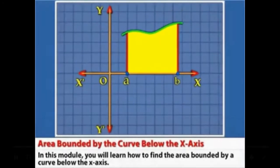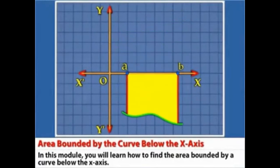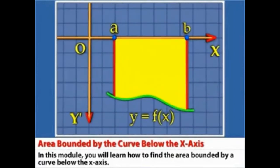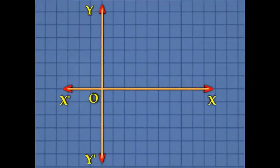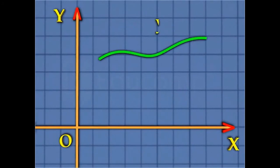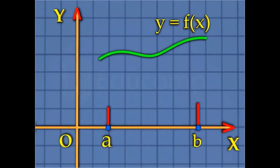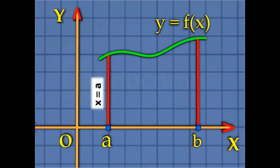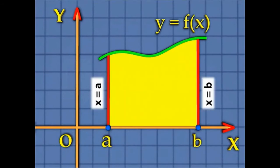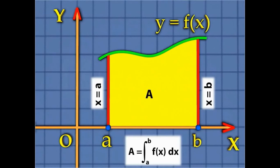In this module, you will learn how to find the area bounded by a curve below the x-axis. You may know that the area enclosed by the graph of a function y = f(x) and the x-axis between two lines x = a and x = b is equal to the definite integral from a to b of f(x) dx. This is the formula to find the area bounded by a curve above the x-axis in the given interval.